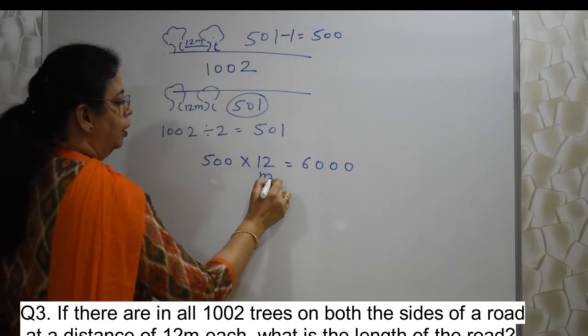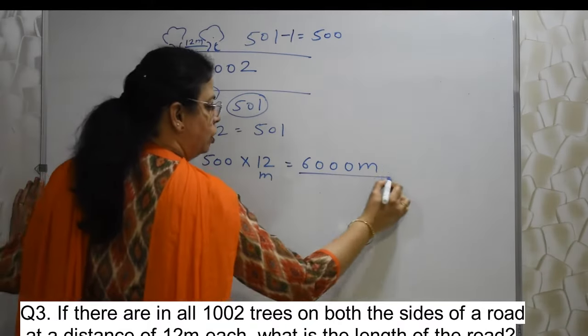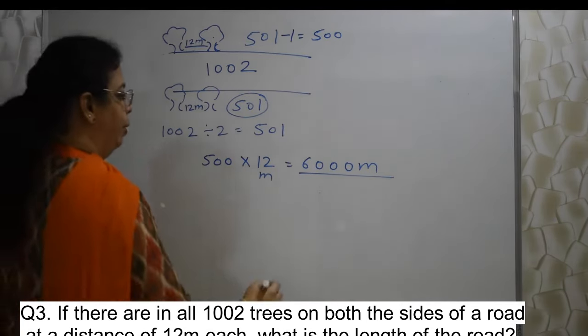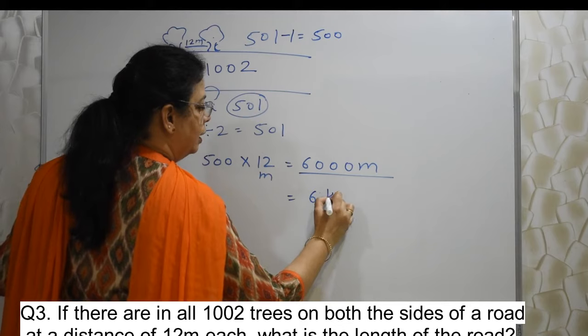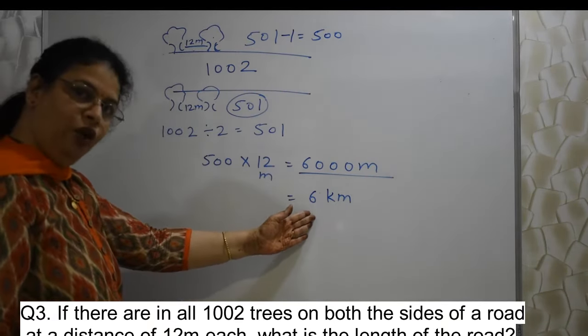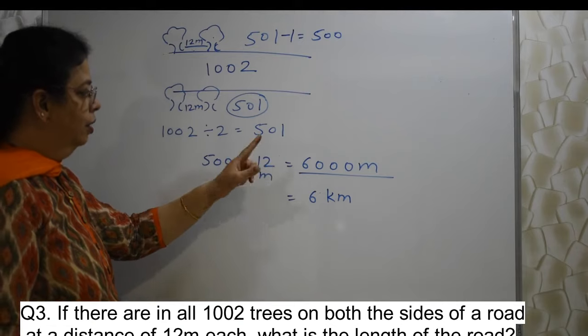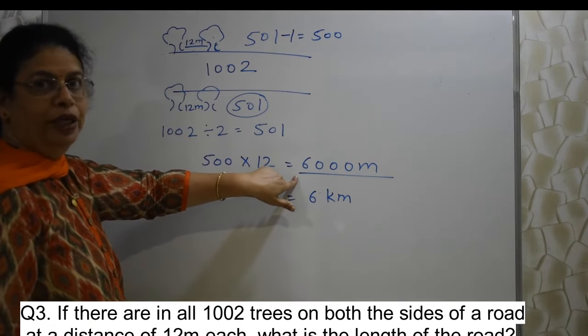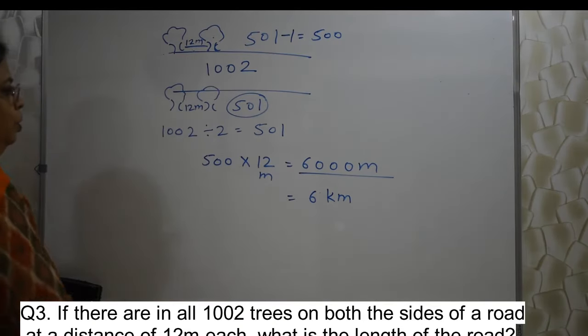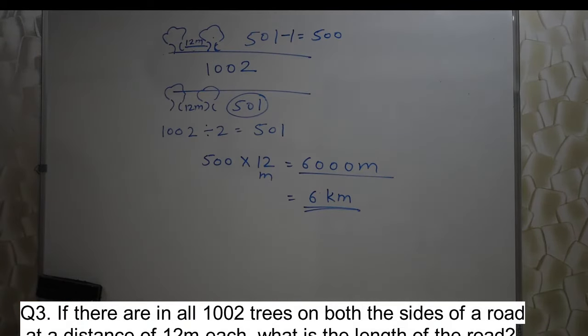This was in meter. So, obviously, this also will be in meter. 6000 meter may not be one of the option. Why? Because they might give you 6 kilometer. Because 6000 meter is nothing but 6 kilometer. So, they expect you to immediately make out. If 6000 meter is not there, then 6 kilometer you have to choose. Because it is the same thing. So, answer is road is of 6 kilometers. Very interesting sum. Isn't it?